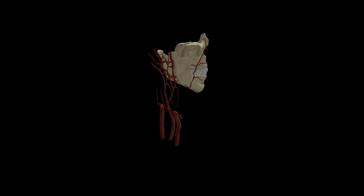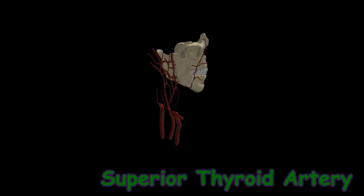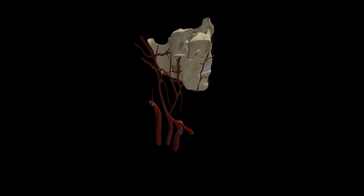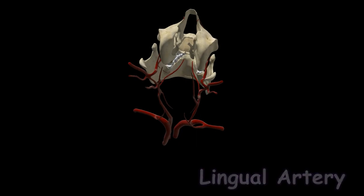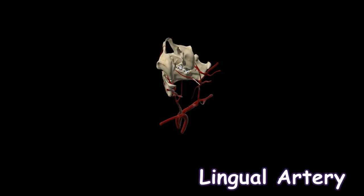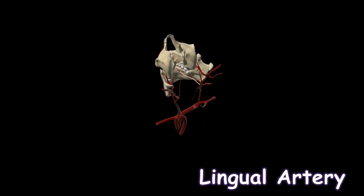The external carotid artery moves upward on the outer surface of the skull and bifurcates into many branches. The first branch is the ascending thyroid artery, which supplies the thyroid gland. The second branch is the lingual artery, which supplies the tongue.